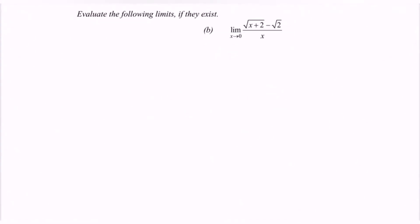Now we are going to discuss example B: the limit when x approaches 0 for the function (square root of (x plus 2) minus square root of 2) over x.